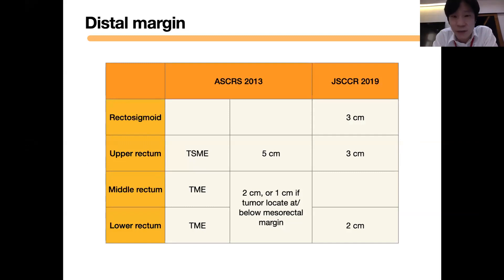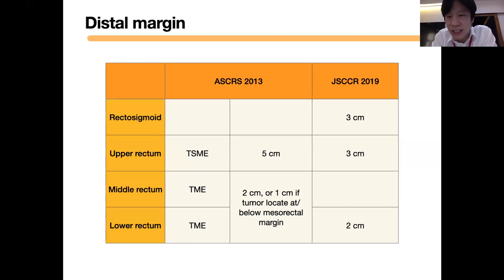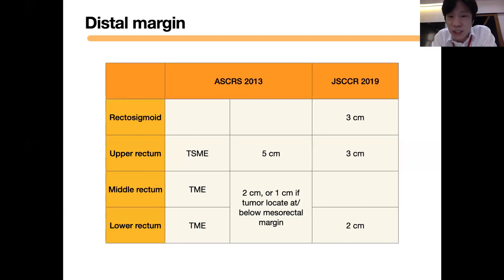There are two guidelines for rectal cancer resection: from ASCRS and from the Japanese group. For rectosigmoid and upper rectum cancer, they recommend tumor-specific mesorectal excision with at least a three-centimeter margin. For middle and lower rectum, they recommend total mesorectal excision with a distal margin of two centimeters per Japanese guidelines.